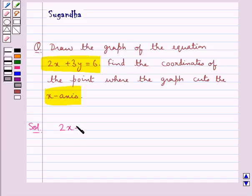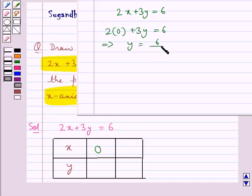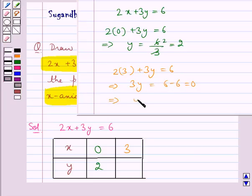The given equation is 2x + 3y = 6. We will find the values for x and y that satisfy this equation. When we put x = 0, we get y = 2. When x = 3, we get y = 0.